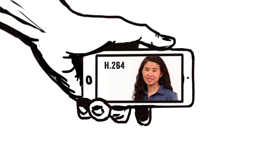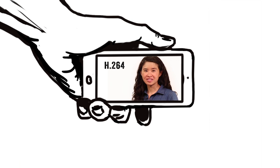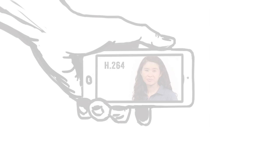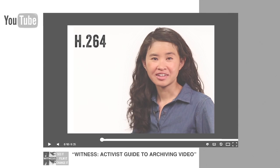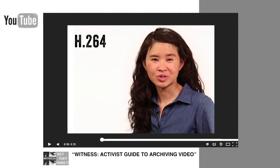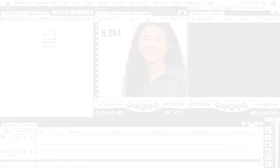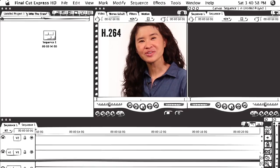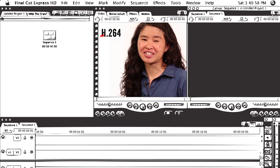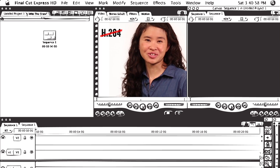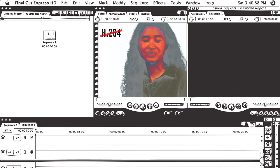H.264 is an example of a common codec. It is used on all kinds of cameras and provides good visual quality for a relatively small file size. It is also a widely used codec for streaming video on the internet. However, H.264 is not as easy to use with older editing software.